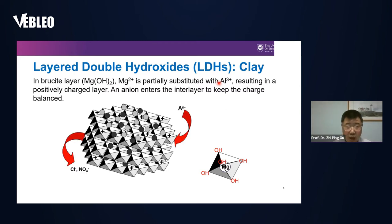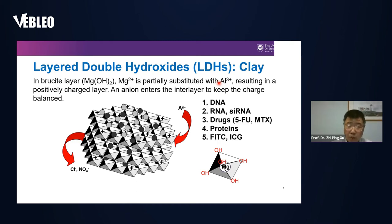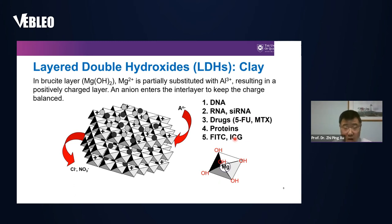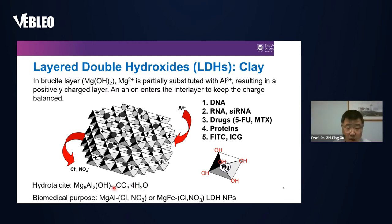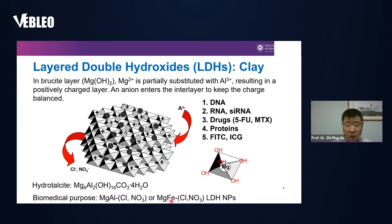One key property of LDH is that the interlayer anions can be exchanged. This enables loading of DNA, RNA, drugs, proteins, and dyes — molecules that mostly carry negative or zwitterionic charge — making LDH a very efficient carrier. In nature, there is a mineral called hydrotalcite, which is magnesium aluminum hydroxide carbonate hydrate. In the laboratory for biomedical purposes, we typically use magnesium-aluminum or magnesium-iron systems, and can incorporate divalent or trivalent cations for functional particles.